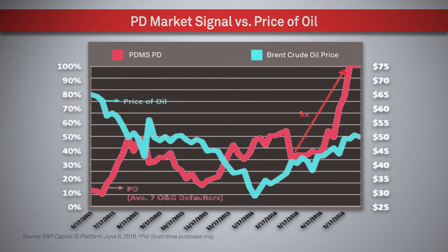To see the path to default of these seven companies, I plotted the average of their PD Market Signals model output against the price of oil for the past 12 months. Here we have date on the horizontal axis, average PD on the left-hand axis plotted in red, and price of oil on the right-hand axis plotted in teal.